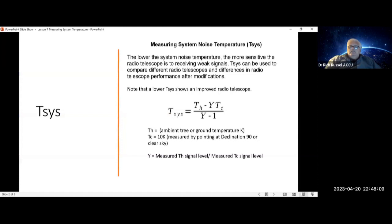T-SYS measured equals T-Hot minus y-factor times T-Cold, all divided by the y-factor minus one.